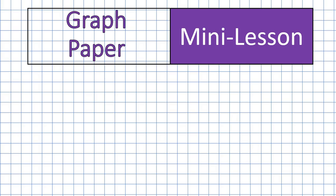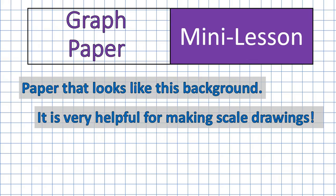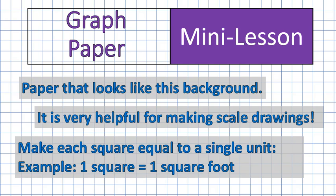Graph paper is paper that looks like this background. It's really helpful for making drawings, and when you have graph paper, you want to try and make a scale that is easy to use. Usually a single unit, like one square, is equal to one square foot. That makes it really easy and nice, and it makes your drawings kind of make sense.